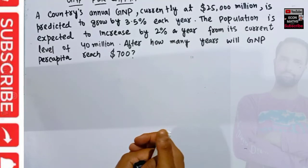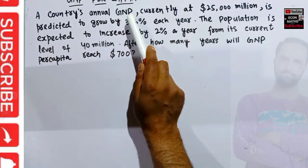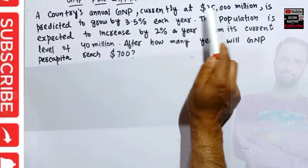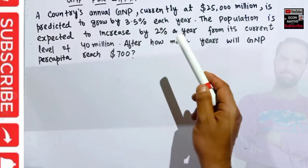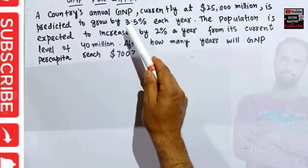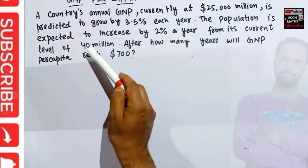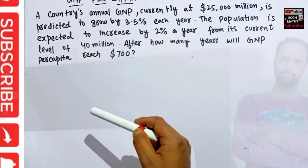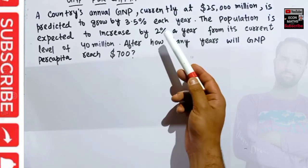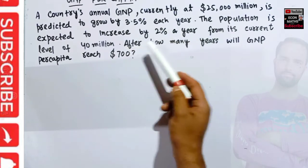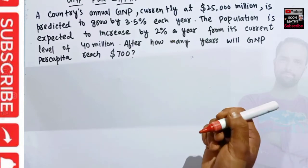In this video we will solve a problem on GNP per capita growth. A country's annual GNP, that is gross national product, currently at twenty-five thousand million dollars, is predicted to grow by 3.5 percent each year. The population is expected to increase by 2% a year from its current level of 40 million. We need to find out after how many years will GNP per capita reach $700.